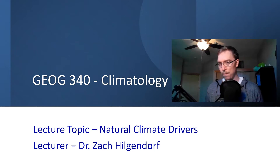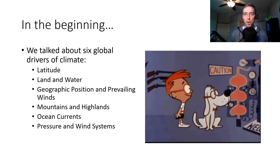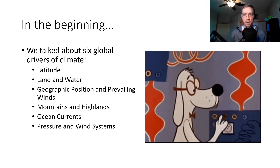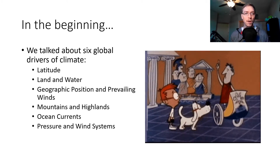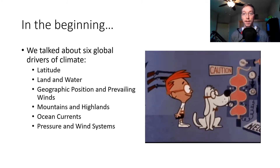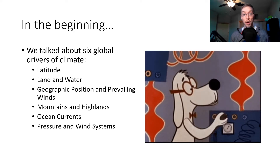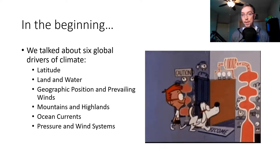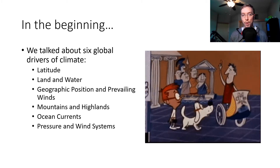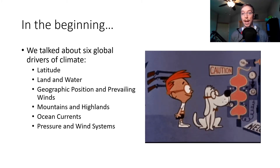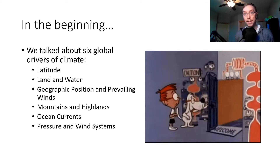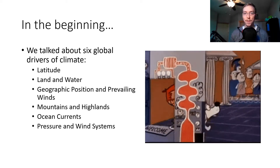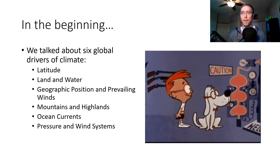Paleoclimates are climates that used to be. So we have to go to the Wayback Machine for this one because we think way back to the beginning. I think this was lecture two — we talked about six global drivers of climate: latitude, land and water distribution, geographic position and prevailing winds, mountains and highlands, ocean currents, and pressure and wind systems. We have talked about these ad nauseum over the last number of weeks throughout this whole semester. We're in week 14.